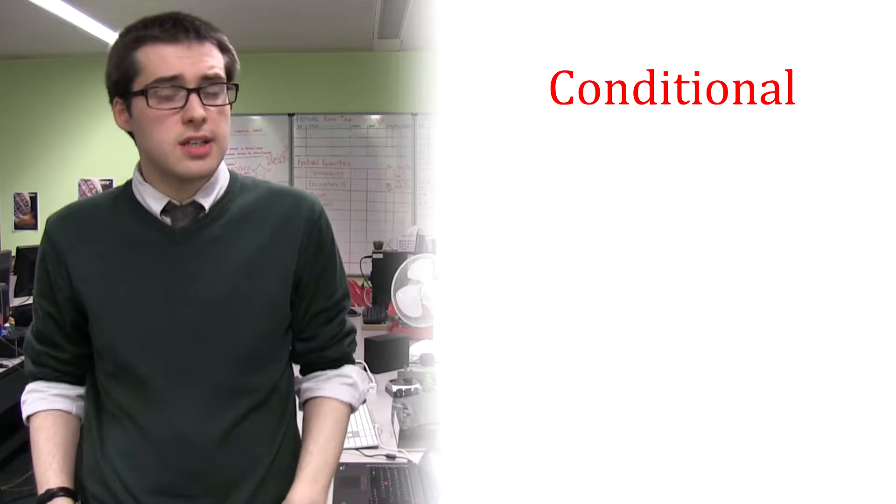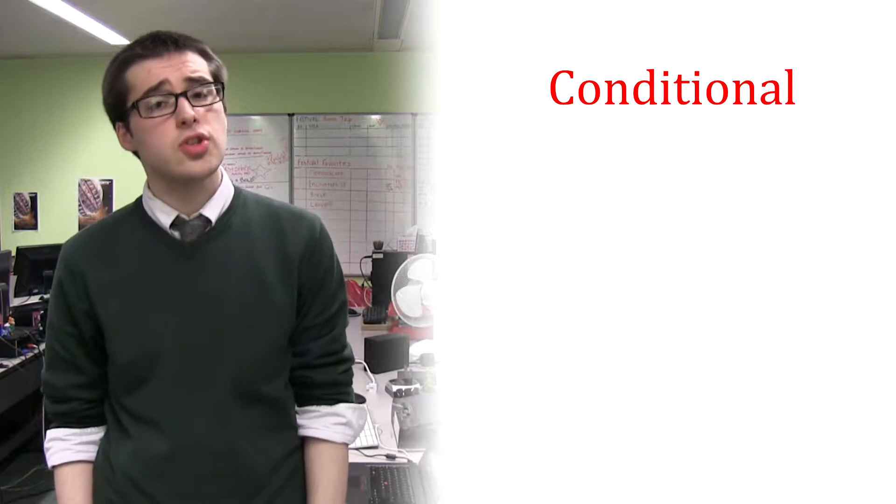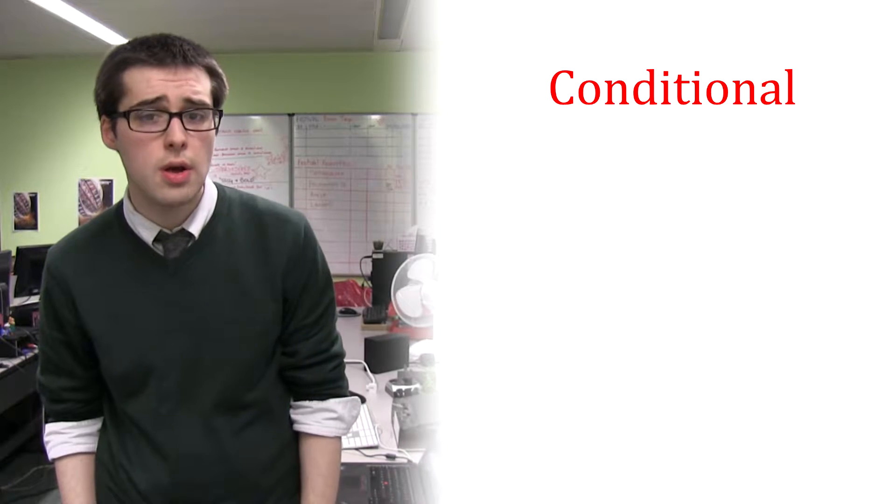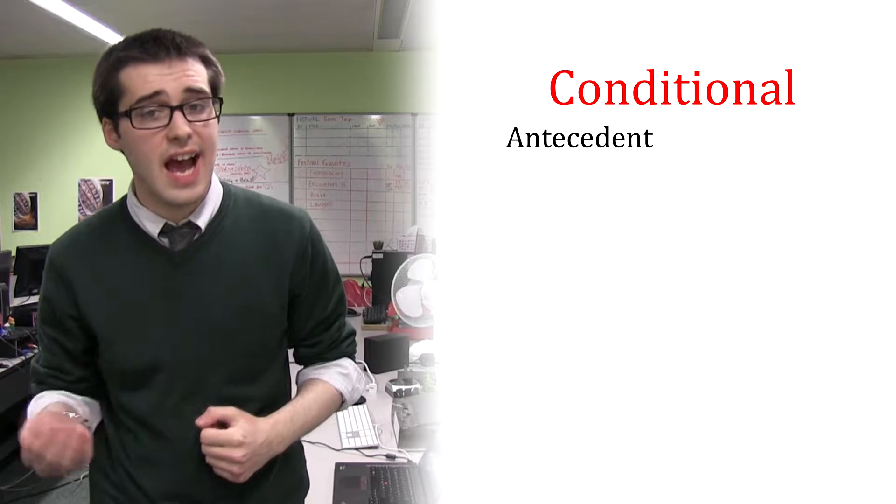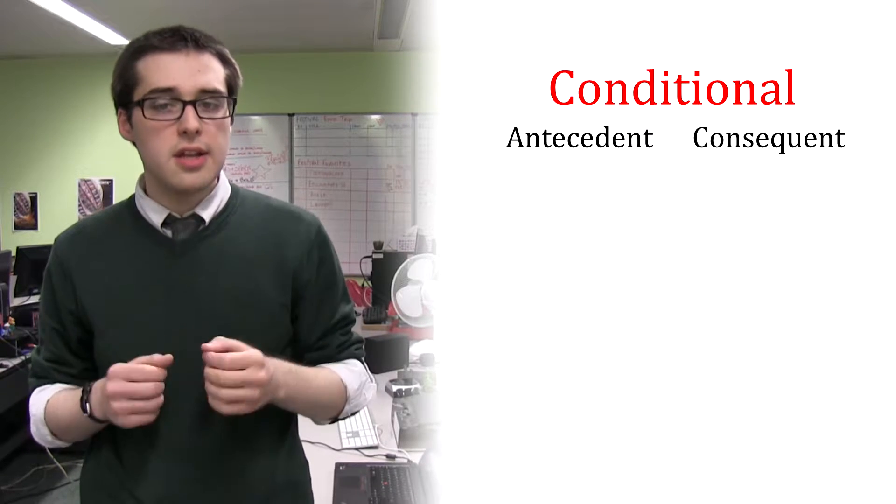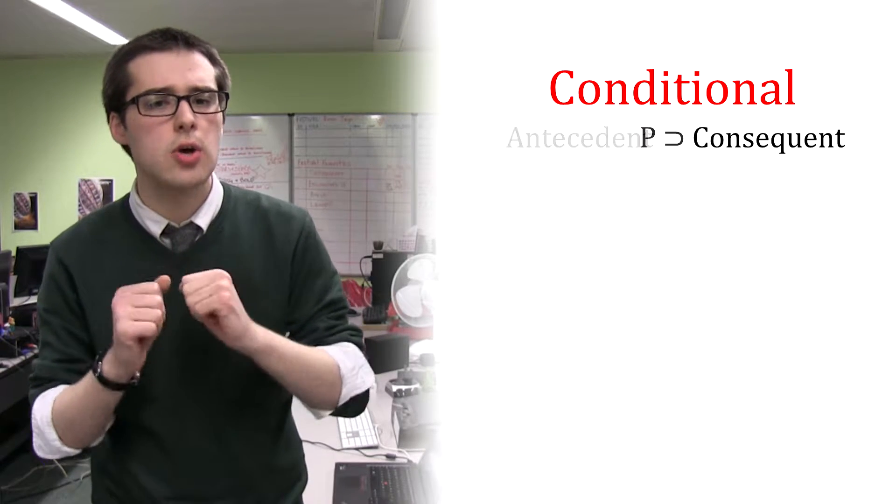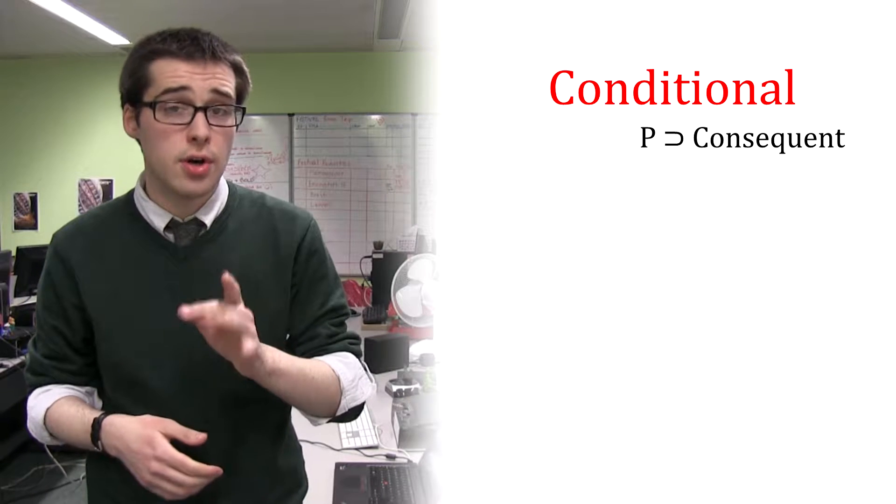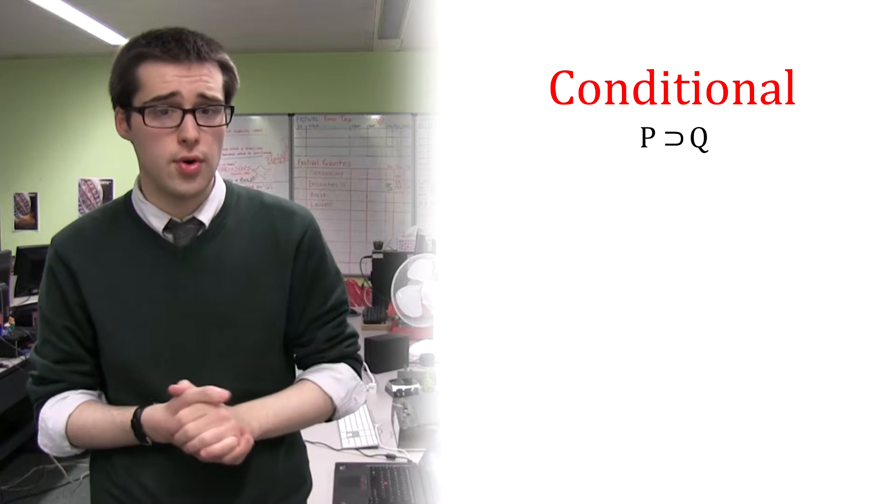Conditional sentences in natural language often contain two different propositions. One proposition is the antecedent, the other is the consequent. When translating, the antecedent must always go before the horseshoe and the consequent must go after the horseshoe.